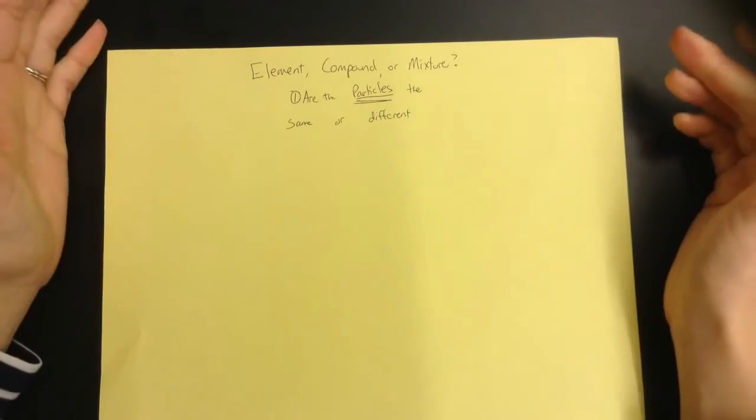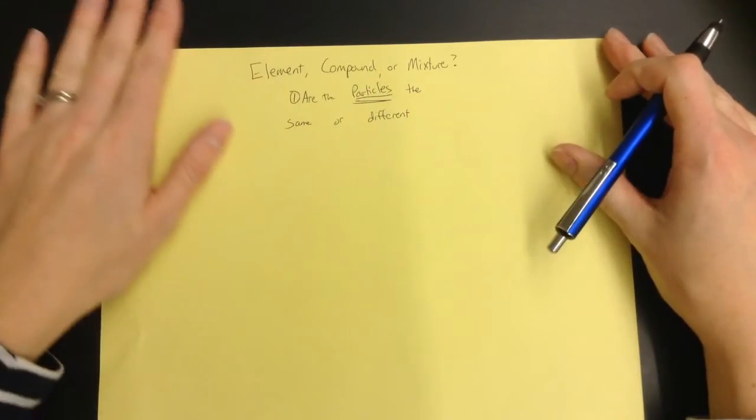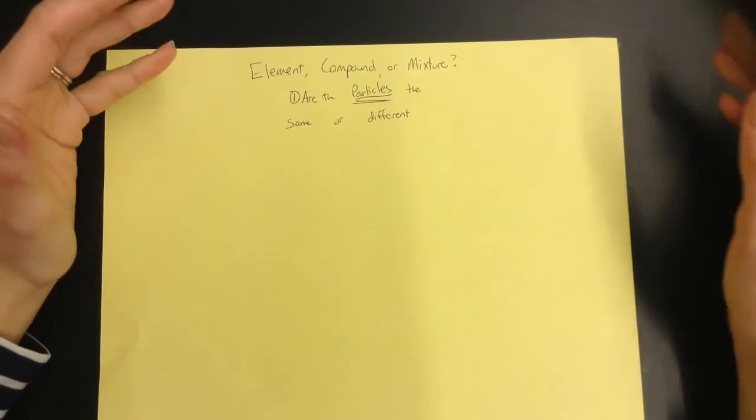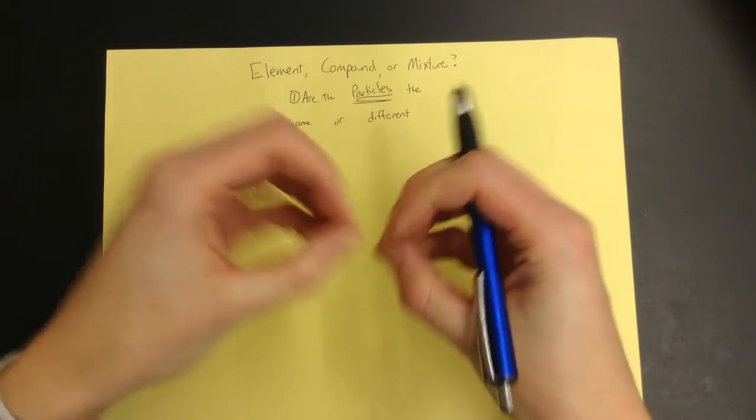Now by particle we mean a chunk, so in a particle diagram that would be the separate pieces. If they're separated by space then they're different particles, if they are touching, if they're stuck together, then they are one particle.